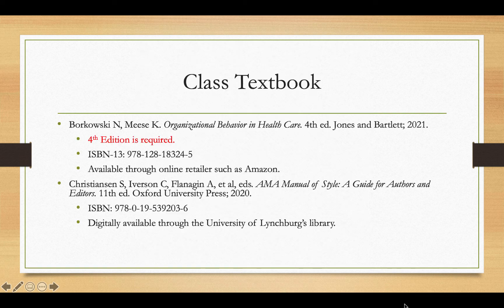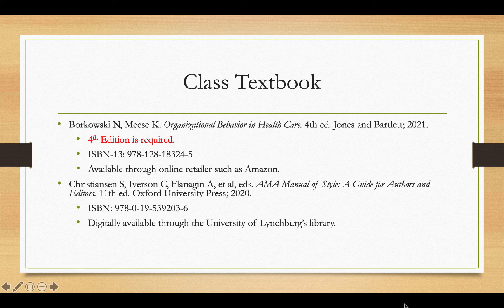The class textbook is Organizational Behavior in Healthcare by Borkowski and Mies. It is the fourth edition — you do need the fourth edition because the quizzes have chapters not present in the third edition. That is the ISBN number, and the textbook is available at online retailers such as Amazon. The other textbook you will need in just about every course in this program is the AMA Style Guide, 11th edition, which is digitally available through the University of Lynchburg's library, so you don't have to purchase it.